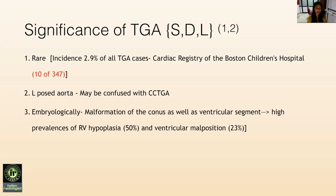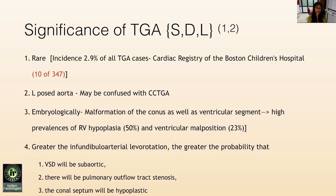Embryologically, this is a malformation of the conus as well as the ventricular segment. High prevalence of RV hypoplasia and ventricular malposition is seen. Also, the L-malposition aorta is because of the levorotation of the infundibular arterial segment. The greater the levorotation, the greater the probability that the VSD will be subaortic.